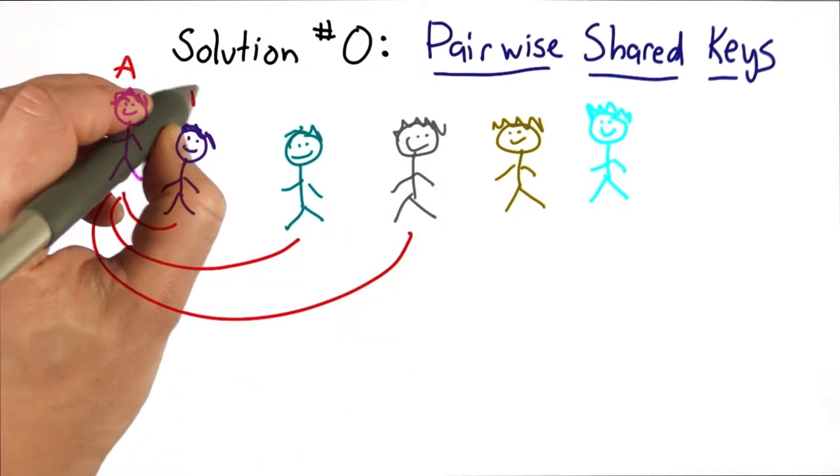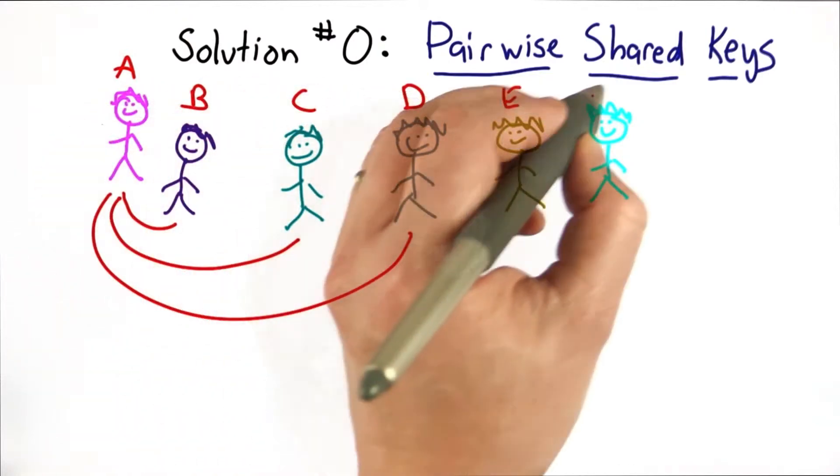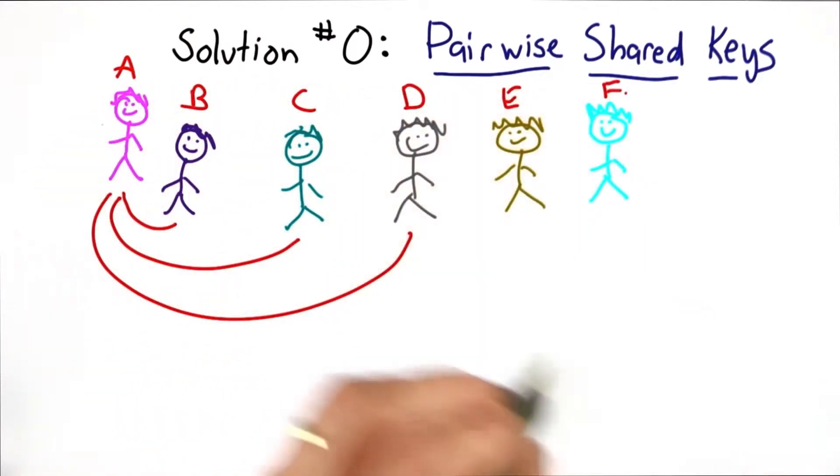So let's say this is Alice, Bob, Colleen, Diana, someone whose name starts with E, and someone whose name starts with F.